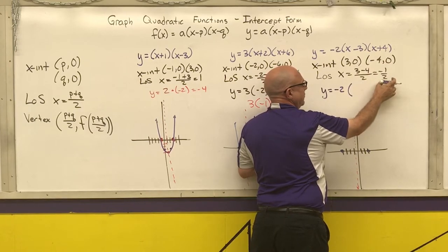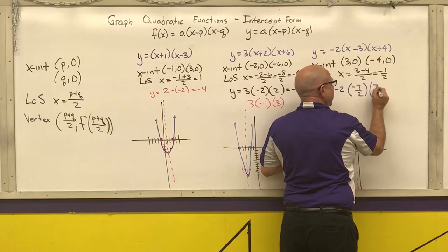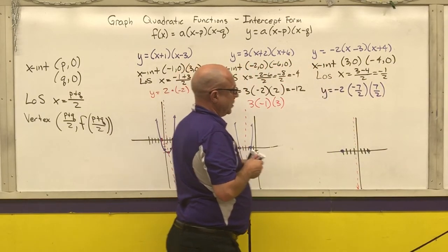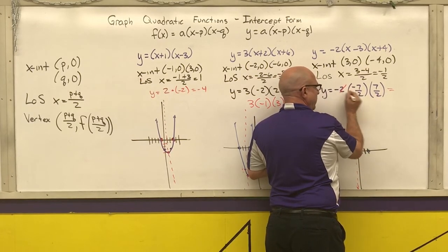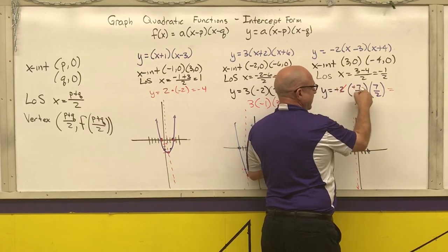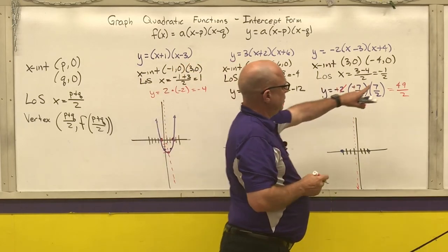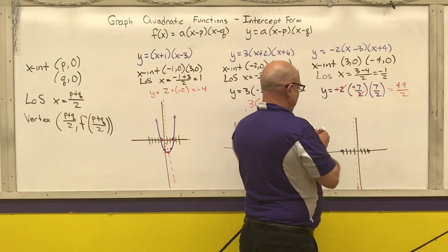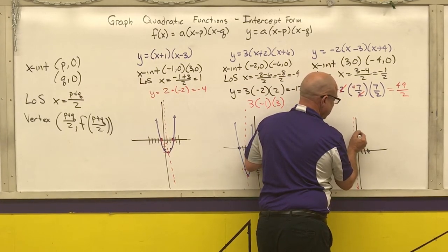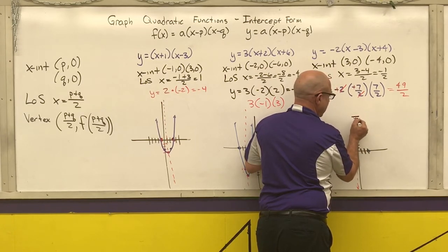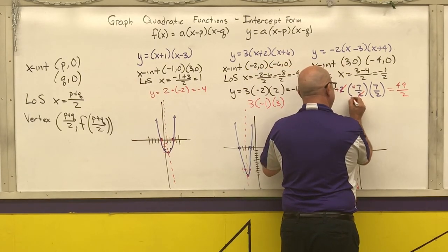Negative 3 minus 1 half is negative 3 and 1 half. 4 minus 1 half is 3 and 1 half. And now what I'm going to do is I'm going to do the multiplication. And I'm going to simplify a little bit first. A negative times a negative is a positive. Those two twos can cancel. So I now have a positive. 7 times 7 is 49 over 2. So 49 halves would be 24 and 1 half, which is going to be way up here. 24 and 1 half at negative 1 half.